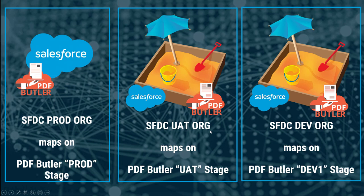These customizations and this testing can also be the PDFButter testing, of course, and every org can map to a certain development stage or a certain stage. There is only one org that can link to the production stage — that's the production org —